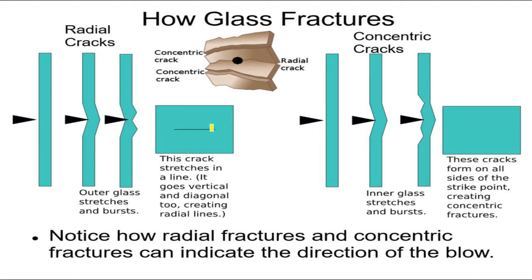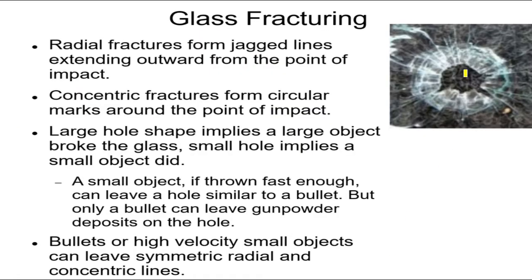The radial crack doesn't form only horizontally — it forms upward and downward too. That's why it forms those radial lines going up, down, and to the side — it burst. So let's say a bullet, or a tiny pebble, causes this fracture, this broken glass. It came from the other side and burst this side, forming those radial cracks.